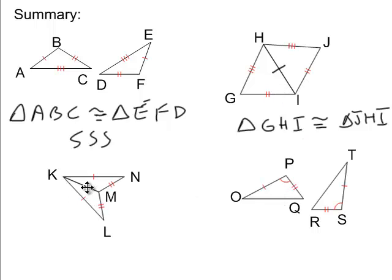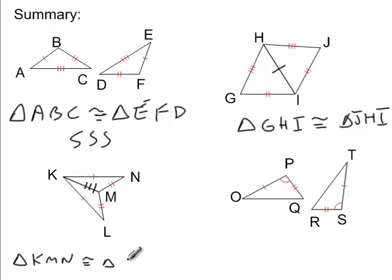This one here also has a shared side — KM is congruent to itself by the reflexive property. Therefore, triangle KMN is congruent to triangle KML. These two triangles are congruent by side-angle-side.